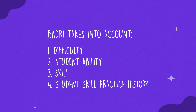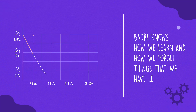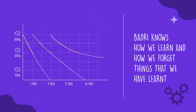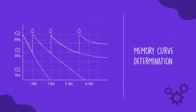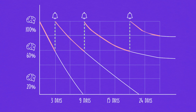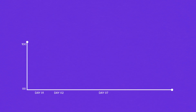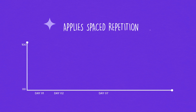Badri also knows that Sara and Tara are bound to forget things. So, it determines their forgetting curve and timely reminds them of concepts. Knowing the forgetting curve means it spreads out the information exposure to them so that the concepts stay with them for longer.